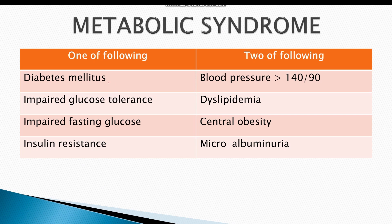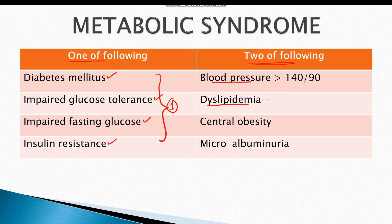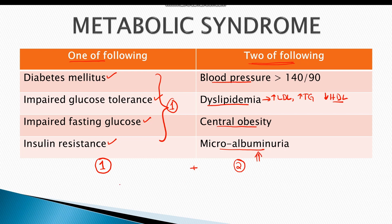What is metabolic syndrome? Metabolic syndrome is a group of diseases, and the WHO defines it as one of the following: diabetes mellitus, impaired glucose tolerance, impaired fasting glucose, or insulin resistance — plus two of the following additional criteria: elevated blood pressure or hypertension; dyslipidemia characterized by increased low-density lipoproteins, increased triglyceride and free fatty acid levels, and decreased HDL; central obesity; and microalbuminuria.